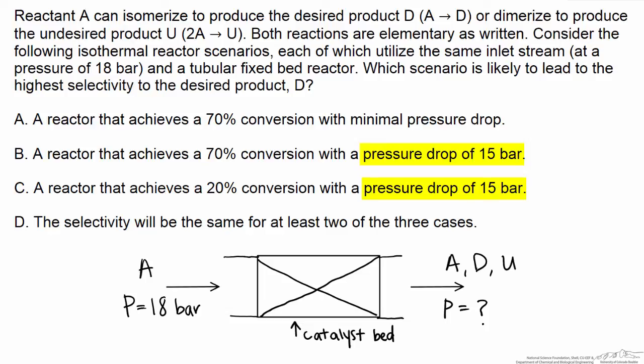The outlet pressure, as we can see from some of the choices, is going to be lower, and that's because of friction that occurs as a result of flow through this catalyst bed, which lowers the pressure so that we see a pressure drop.